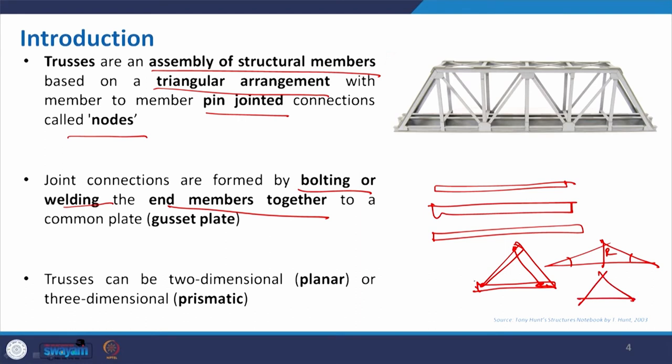Whenever multiple members connect — suppose we take this example of a model bridge — many members are connecting, more than three. With the help of a plate it is connected; this is basically called the gusset plate. Trusses can be two-dimensional or three-dimensional. When two-dimensional we call it planar, and when three-dimensional we call it prismatic.